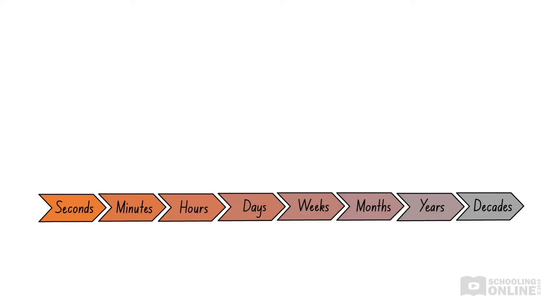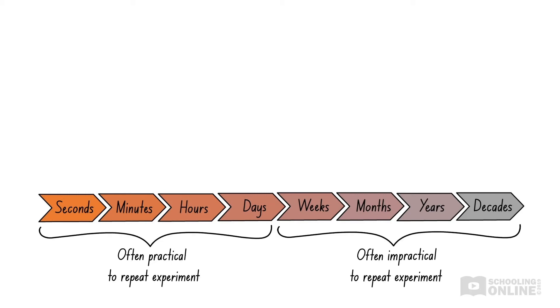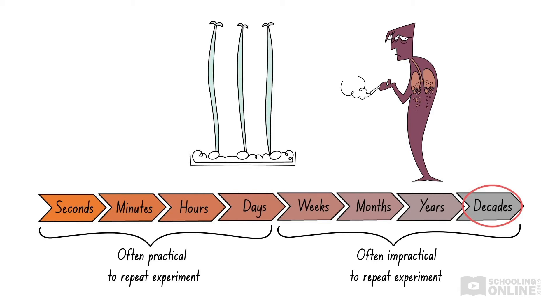Since many experiments in biology span over long periods of time, it is often impractical to wait and repeat the experiment after completing the first trial. Let's consider a study to determine the effect of smoking on lung cancer development. It would take decades to collect each set of results since cancer develops slowly over time. Instead, experiments are often designed so that multiple trials occur at the same time.